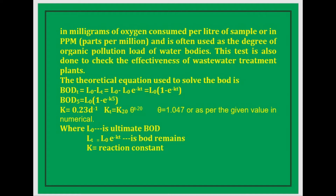Here L0 is the ultimate BOD, and BOD5 equals L0 times (1 minus e to the power of minus K times 5). When calculating the value of K at different temperatures, the equation used is: K_T equals K20 times theta to the power of (T minus 20).